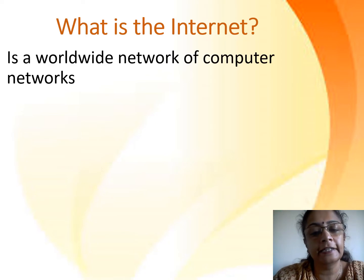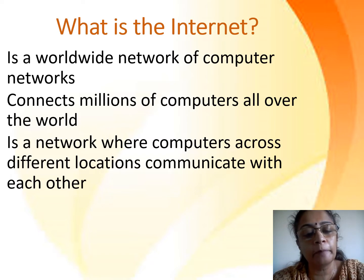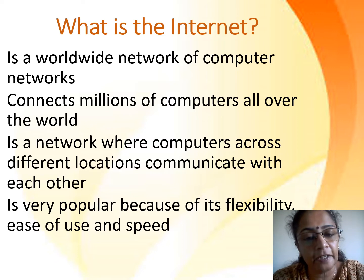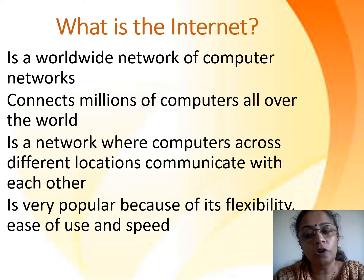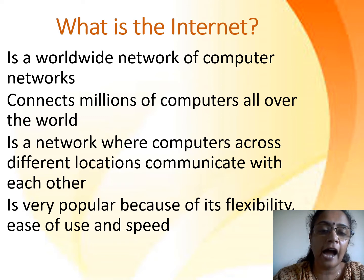So what is internet? Internet is a worldwide network of computers — millions of computers all around the world are connected to each other. It is a network where computers across different locations can communicate with each other. It is very popular because it's flexible to use and has high speed. Basically, internet is a network of networks.